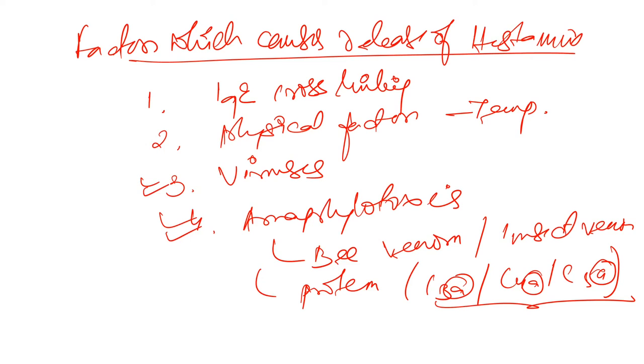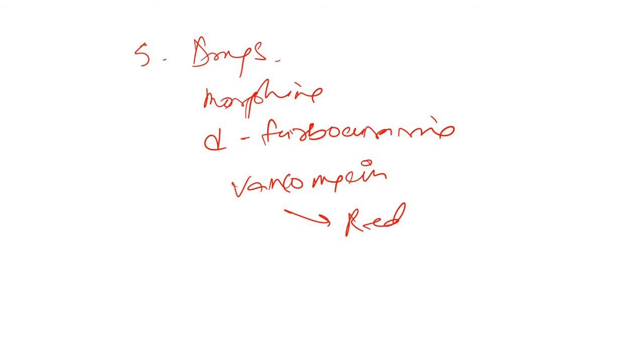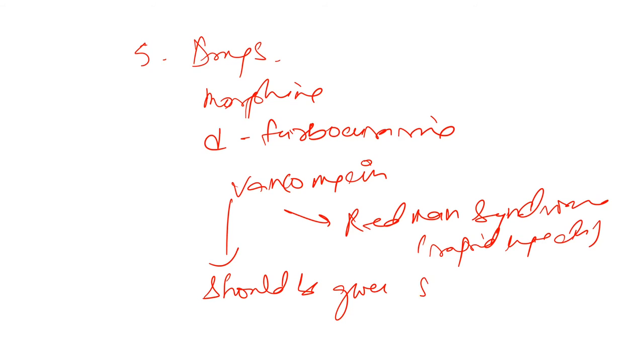So viruses can release histamine. Physical factors like temperature increase will cause histamine release. IgE we know is allergen, IgE is allergen, so that also causes IgE cross linking. Then comes drugs. There are some drugs also which cause histamine release. Drugs like morphine, it should be used cautiously in asthmatics. D-tubocurarine. Then vancomycin. Vancomycin, what does it cause? It causes Redman syndrome if we give rapid injection. So we should give it slow IV.